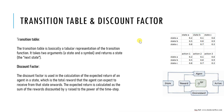Now let's come to discount factor. The discount factor is represented using gamma, as you can see in this image. In reinforcement learning, the discount factor is a parameter that determines the importance of future reward relative to immediate reward, and it is denoted by the symbol gamma.